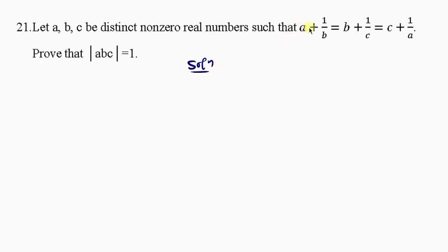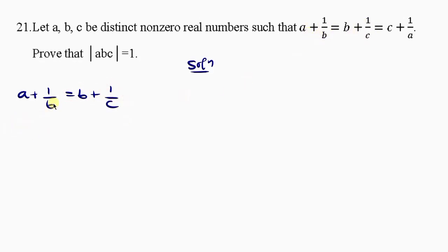The first thing we're going to do is equate the first expression to the second one. So A plus 1 over B is equal to B plus 1 over C. Now I'm going to carry the fraction to the right so that the fractions are on one side, and carry B to the left so the ordinary values are on the other side.